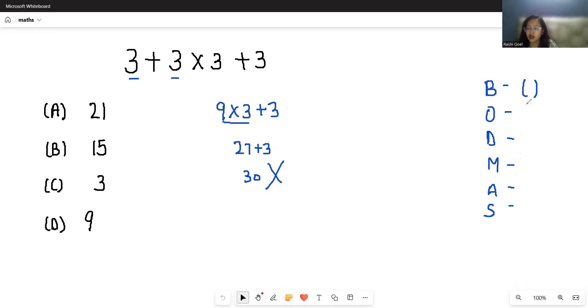You have to first choose the bracket if given, then of, then division, then multiplication, addition, and then subtraction. According to this rule, first we have to solve the digits where the multiplication sign is, so in this case 3 × 3.